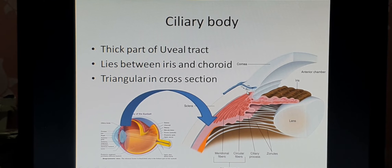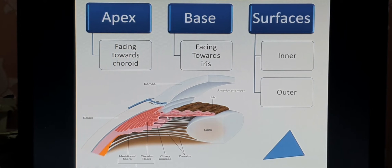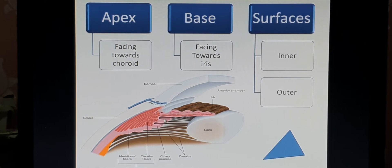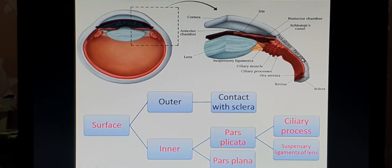The triangular ciliary body has an apex, a base, an outer surface, and an inner surface. The apex faces towards the choroid, and the base faces towards the iris. The outer surface is attached to the sclera, and the inner surface is free and related to the vitreous humor. In the picture, you can see the outermost layer is the cornea and sclera, the second chocolate-colored layer is the choroid, and adjacent to it is the ciliary body.